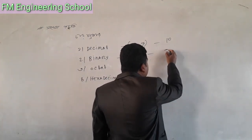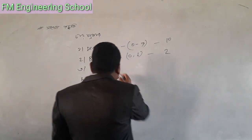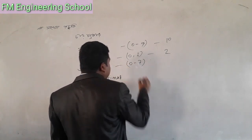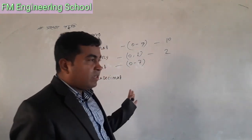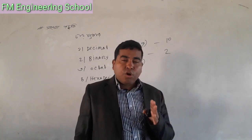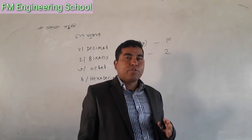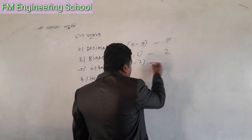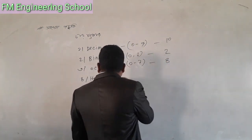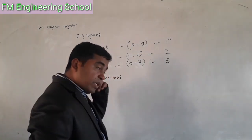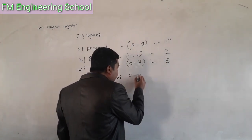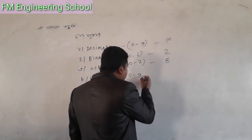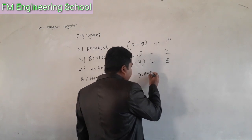Octal has a base of 8. The octal number system uses digits 0 to 7. The value 8 is the base.